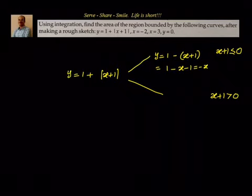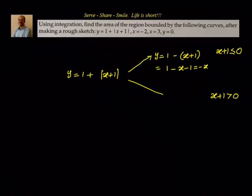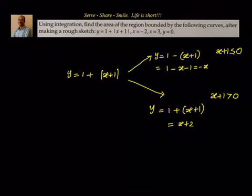The basis for this is that the absolute value of x plus 1 equals x plus 1 when x plus 1 is greater than 0, and minus of x plus 1 when x plus 1 is less than 0. So when x plus 1 is greater than 0, y equals 1 plus x plus 1, which is y equals x plus 2. So we now have two straight lines: y equals minus x and y equals x plus 2.